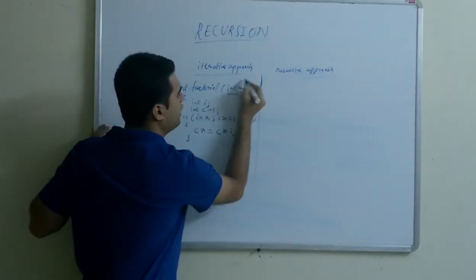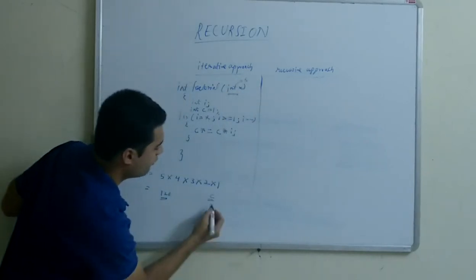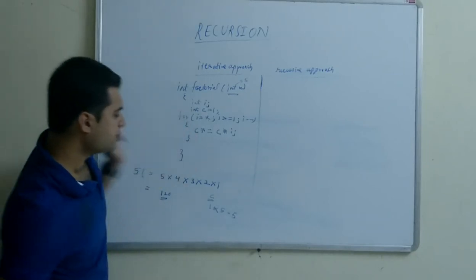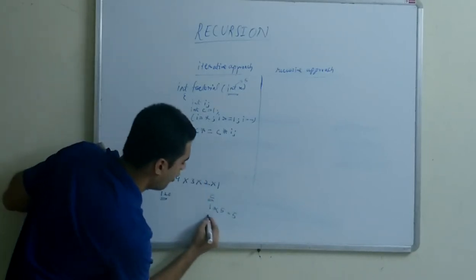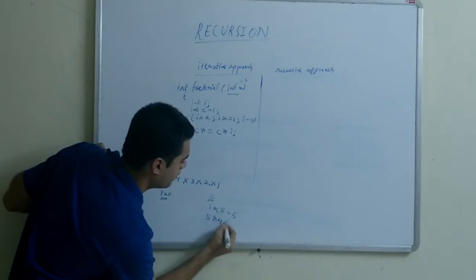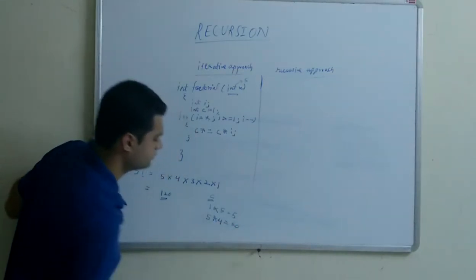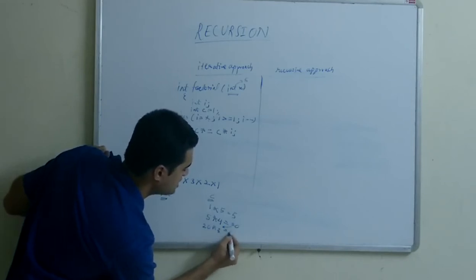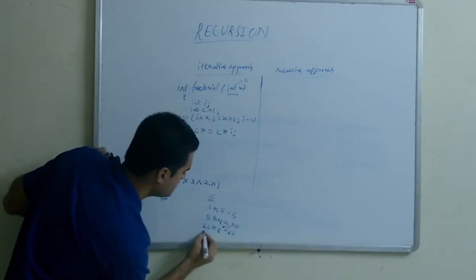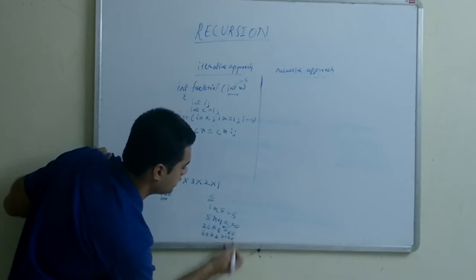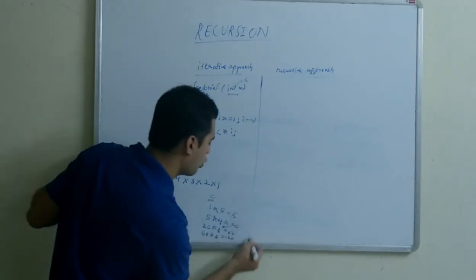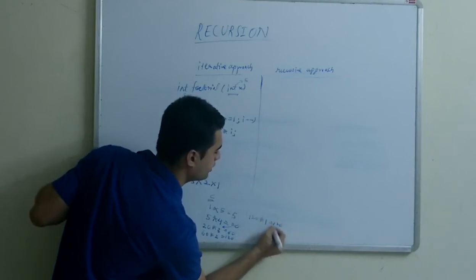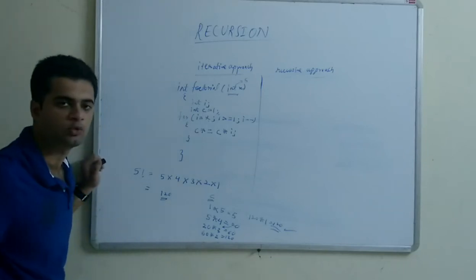In case I pass 5, then the first time the value of c will be 1 × 5 = 5. Next time the value of c will be 5 × 4 = 20. Next time 20 × 3 = 60. After that 60 × 2 = 120. And finally 120 × 1 = 120. So we get 5 factorial equal to 120.